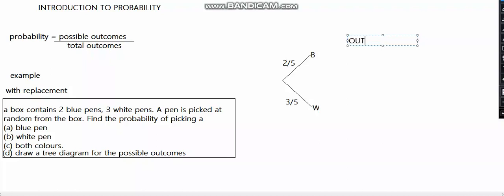For outcomes, we have B and W, because there's a branch for B and a branch for W. Those are the outcomes. This is probability with replacement. Thank you, I'll see you in the next video.